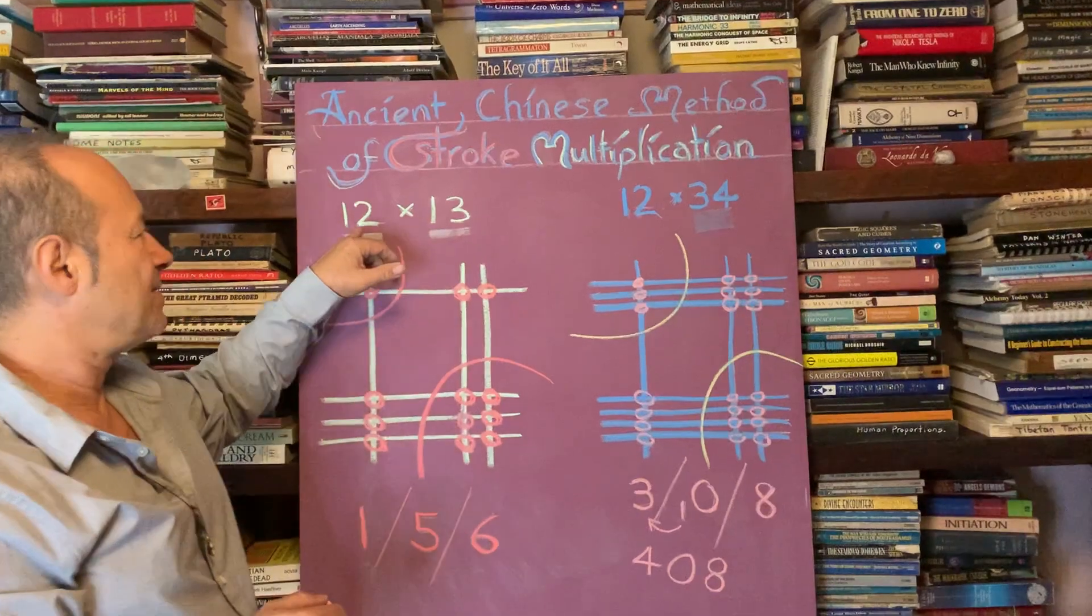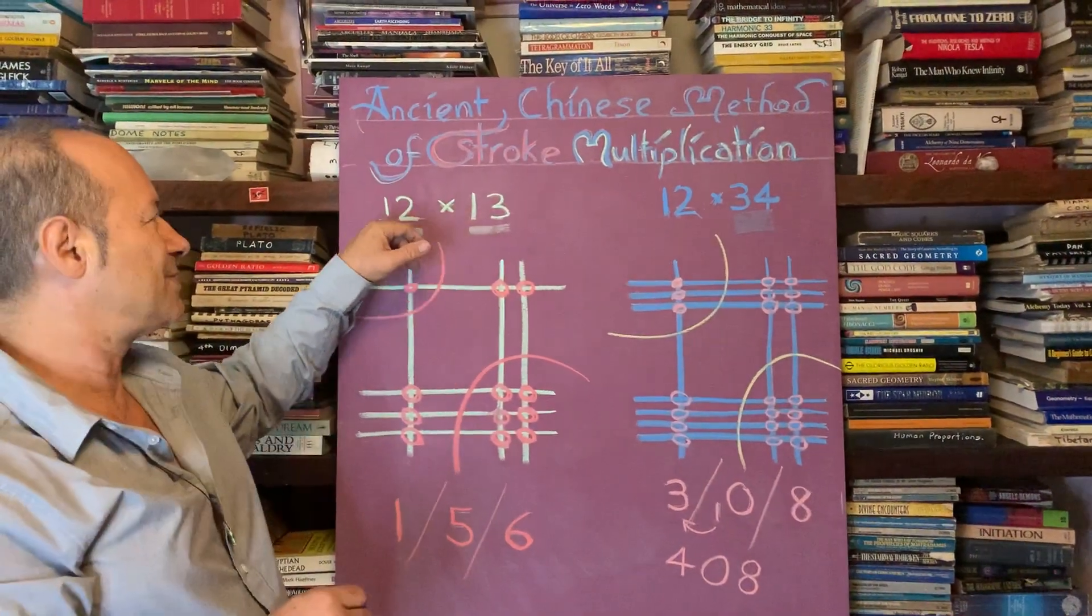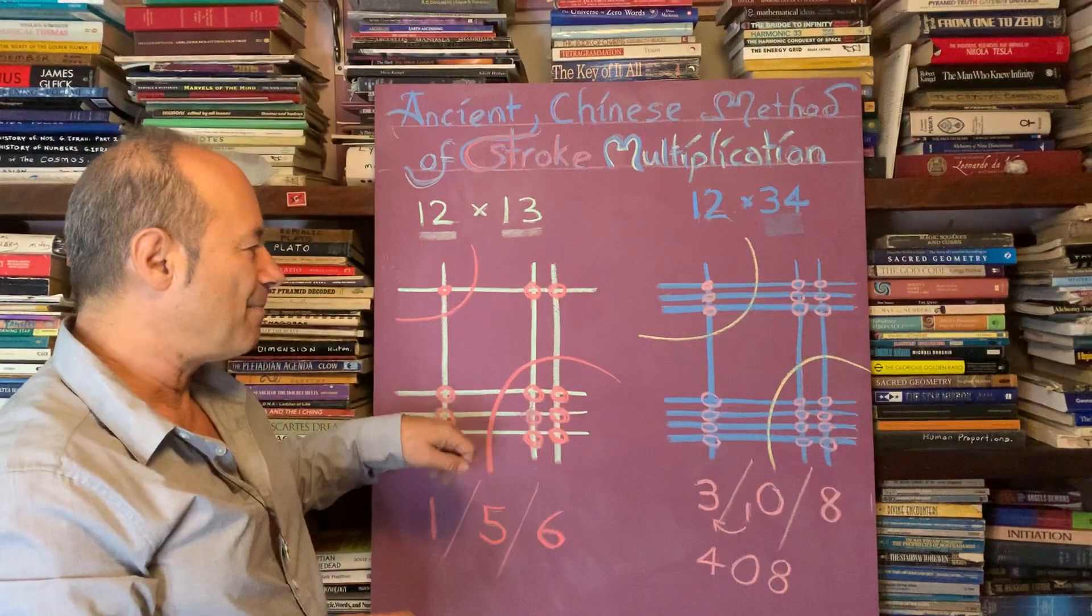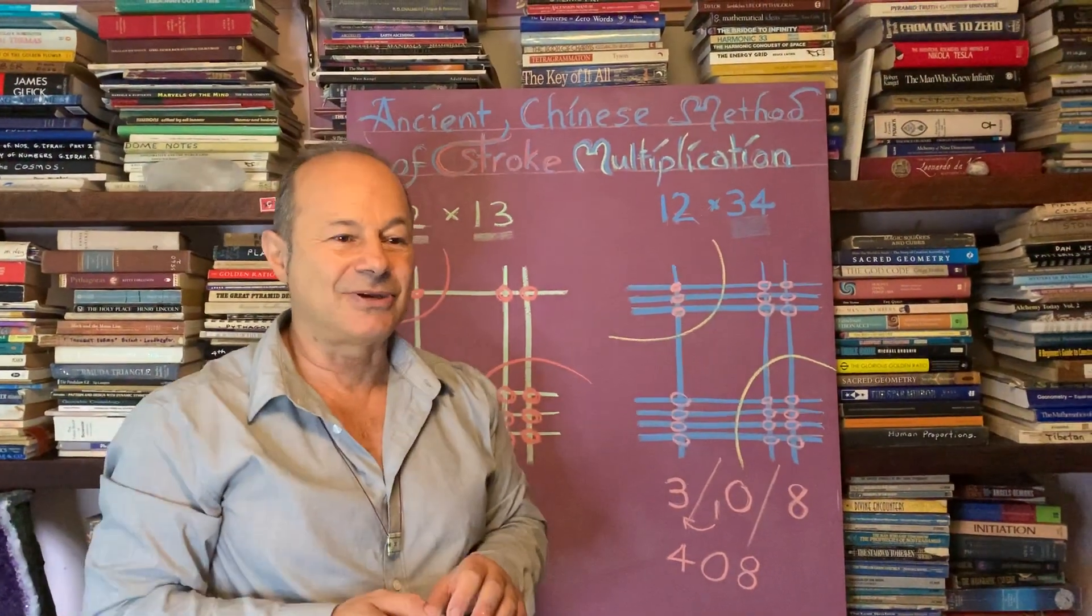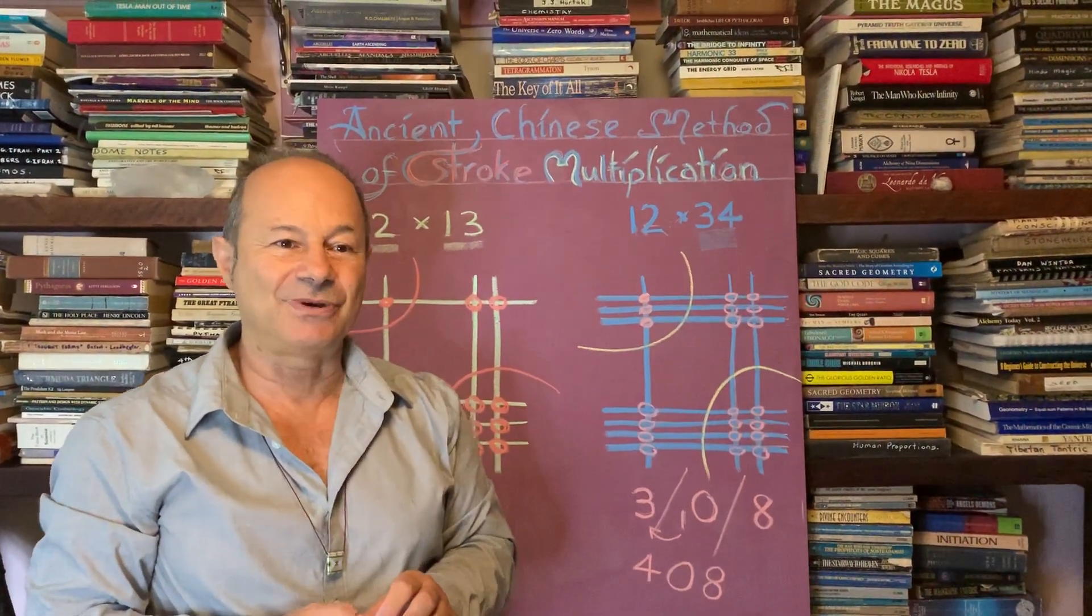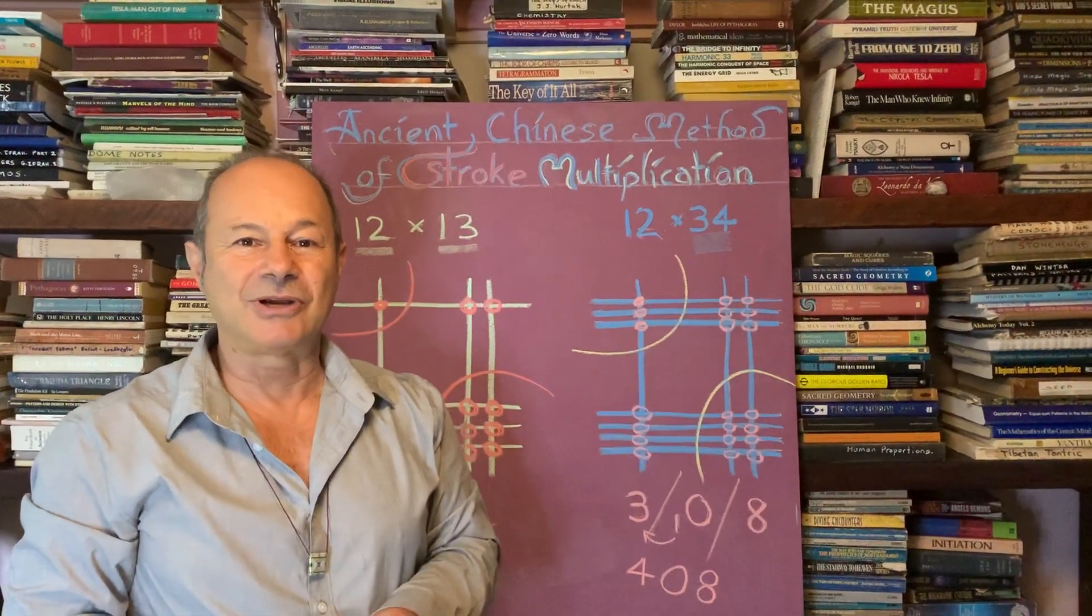So I deliberately chose the numbers, the small digits, like one, two, three, four, and five. So practice some of this at home, just to know that mathematics is fun, it's beautiful. And it's also multi-culturally diverse.